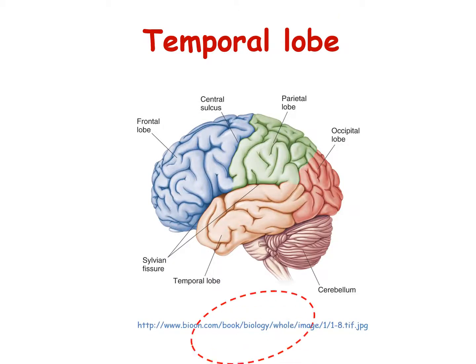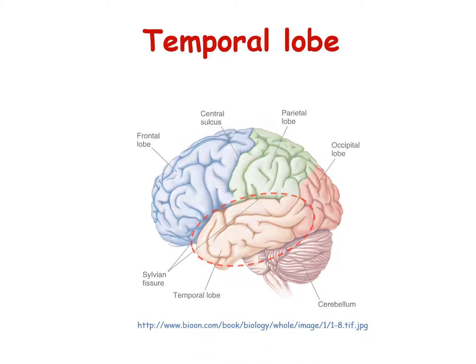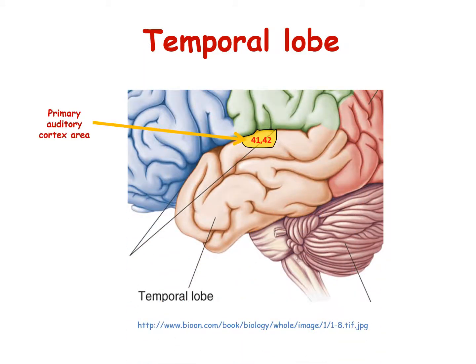The temporal lobe is located on both sides of the brain. It is involved in receiving and processing auditory information (primary auditory cortex, areas 41 and 42), higher order visual information, as well as complex aspects of memory and language. Area 22 on the temporal lobe, left side, is responsible for the comprehension of speech.